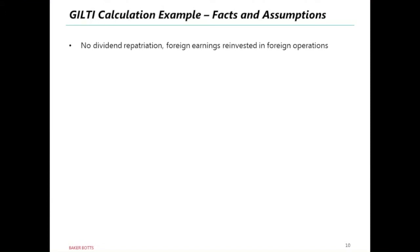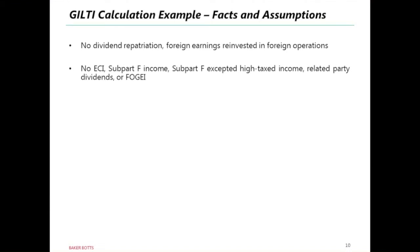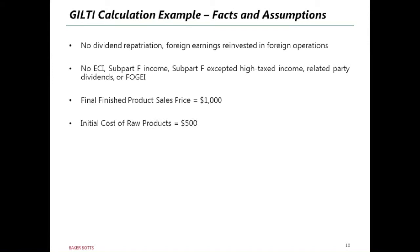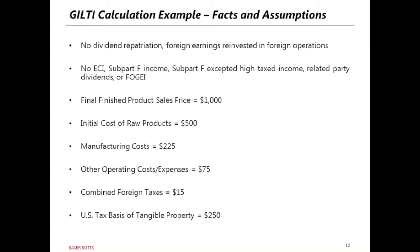Let's walk through a simple GILTI example. We'll assume no dividend repatriation, foreign earnings reinvested into foreign operations, no ECI, no subpart F income, no related party dividends, and no foreign oil and gas extraction income — so all income is GILTI. The finished product sales price is $1,000, with raw product costs of $500, manufacturing costs of $225, other operating expenses of $75, combined foreign taxes of $15, and a U.S. tax basis of tangible property of $250.